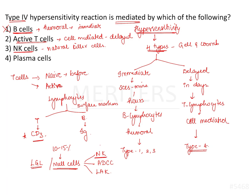Natural killer cells are part of null cells and are highly cytotoxic to the target cells they attach to. NK cells form part of innate immunity because they are not antibody-dependent and are not MHC restricted. Due to their cytotoxic activity on virus-infected cells and tumor cells, NK cells have a role in type 2 hypersensitivity reactions, not type 4. Therefore we can eliminate option 3.